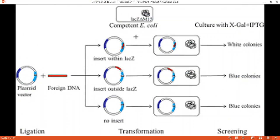The procedure has three steps: first is ligation, second is transformation, and third is screening. Ligation is the process in which there is joining of two nucleic acid fragments through the action of an enzyme. Transformation is the process in which genetic alteration of cells results from the direct uptake and incorporation of exogenous genetic material from the surroundings through the cell membrane. Then in the screening step, we observe the results of the experiment.